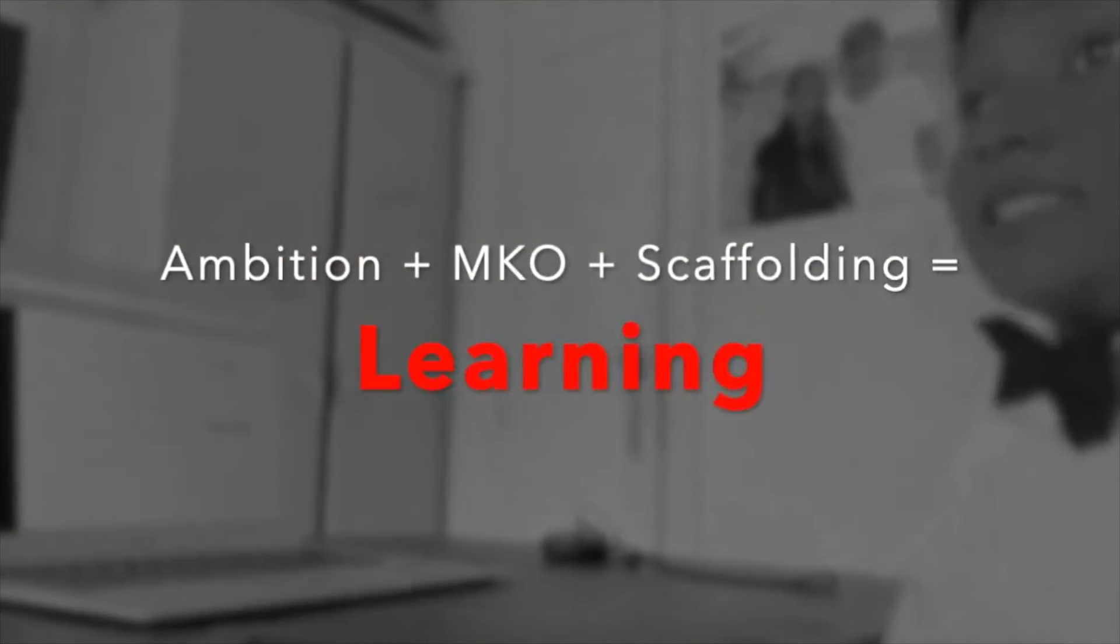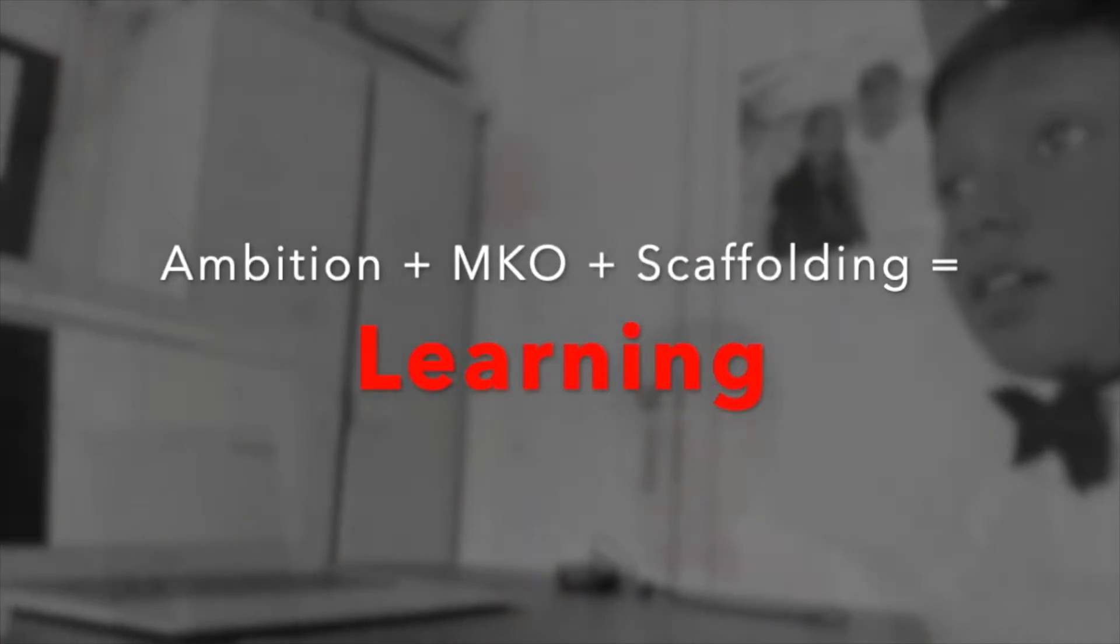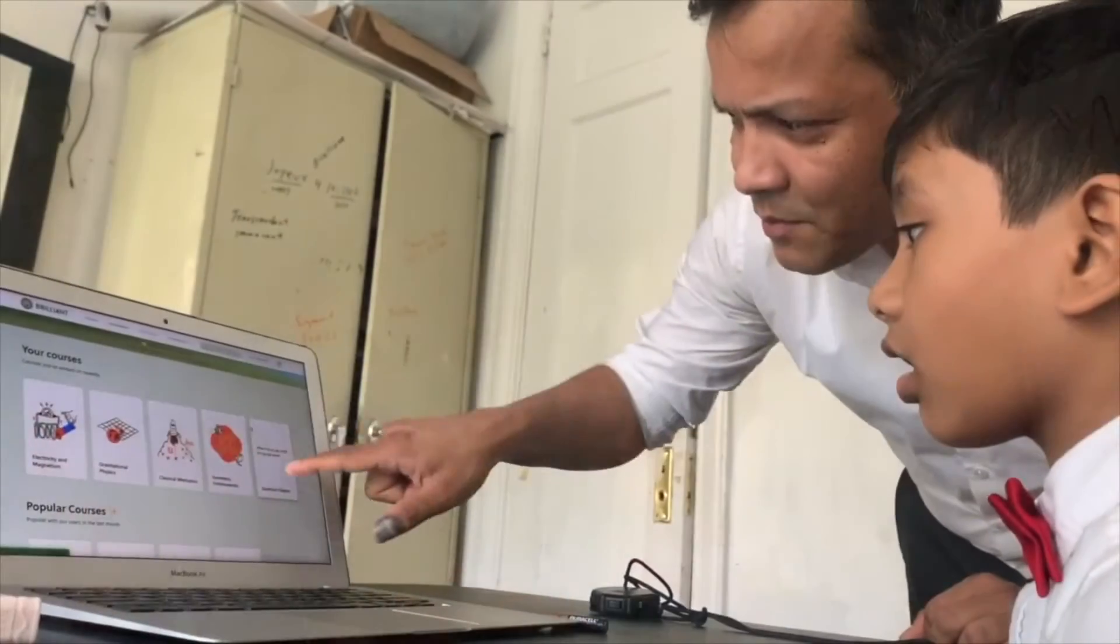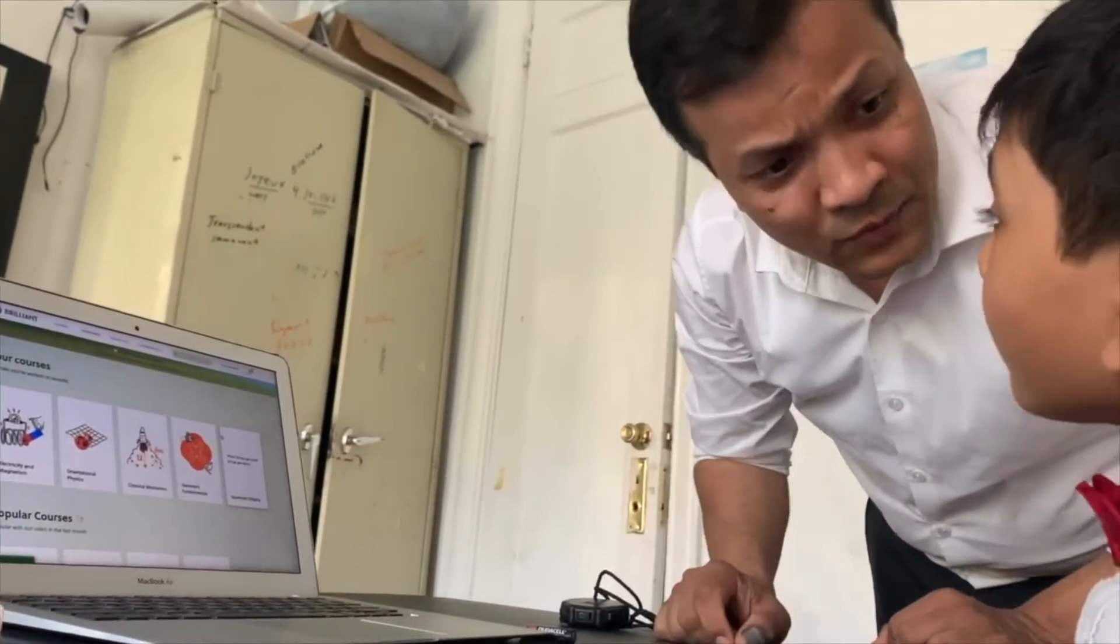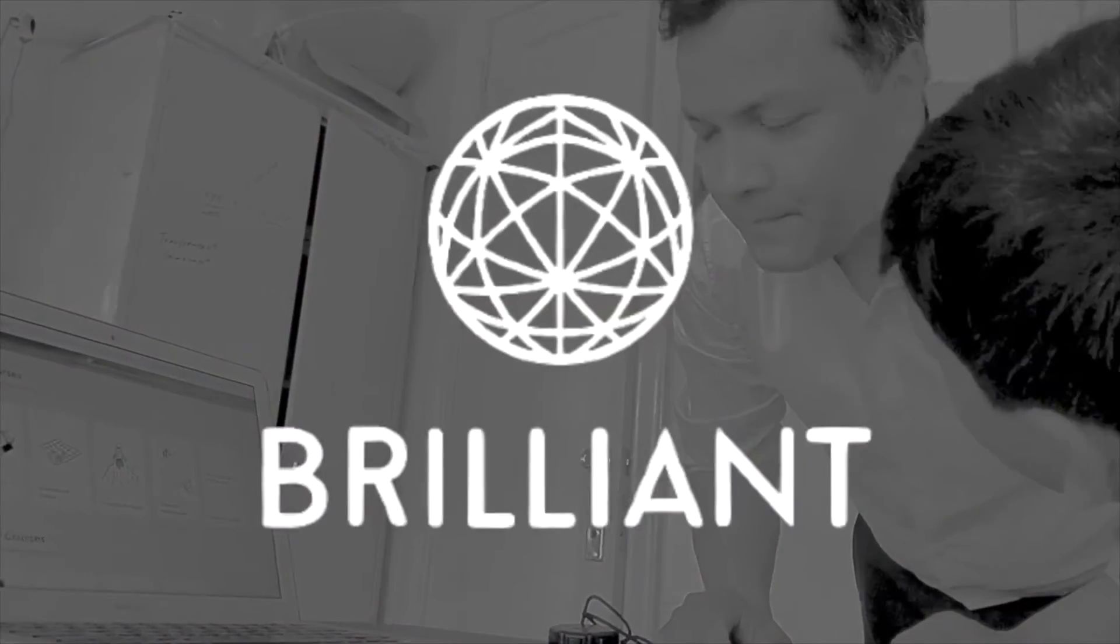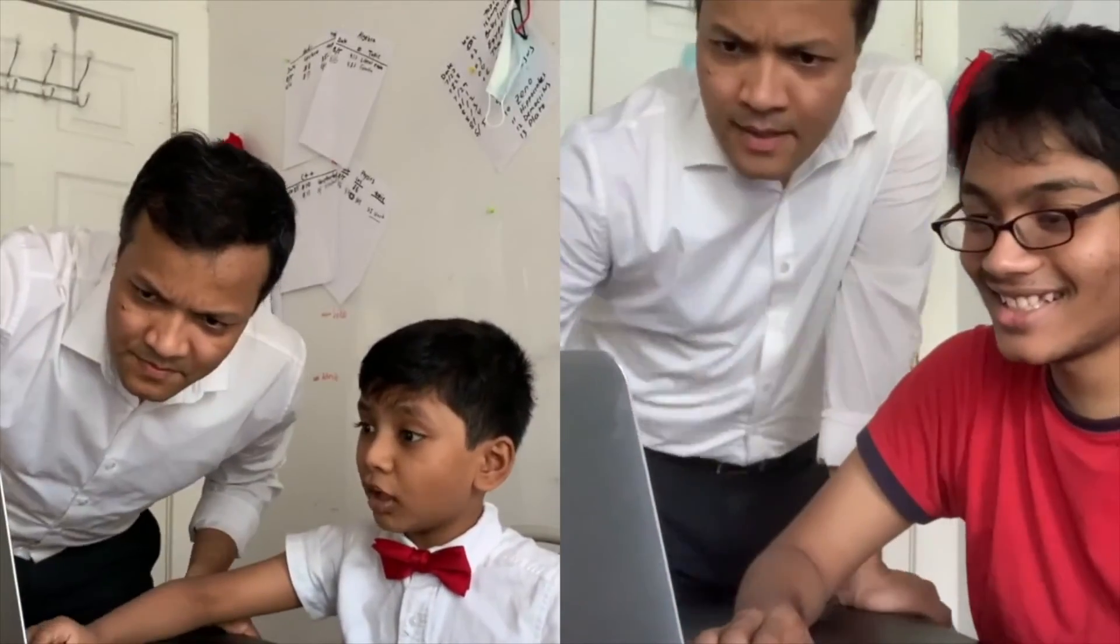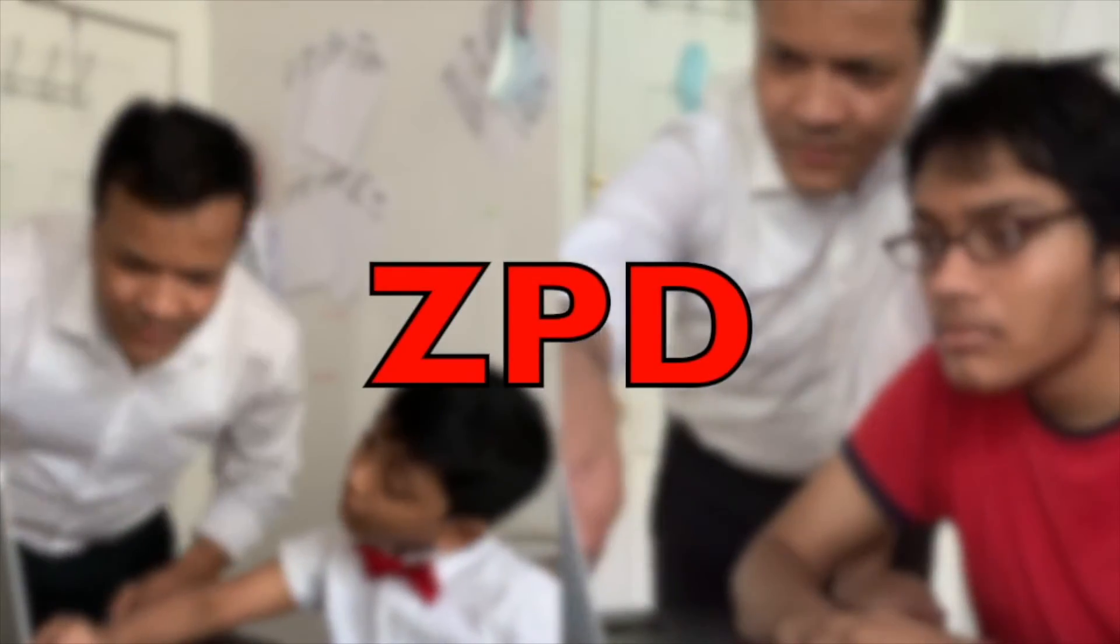Ambition plus MKO plus scaffolding equals learning. We believe anyone can learn anything. That's why our motto is memorization is a crime, and that's why we partnered with Brilliant. Brilliant transforms math and science into hands-on activities so that you too can understand everything from first-grade math to E equals mc squared. Barry Science Lab and Brilliant is your MKO and will give you the scaffolding to expand your ZPD until you become the next Sir Isaac Newton or Albert Einstein.